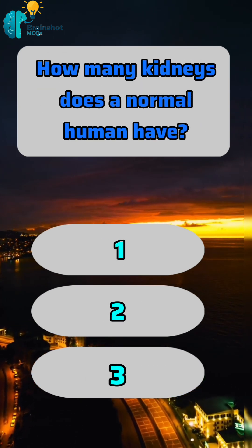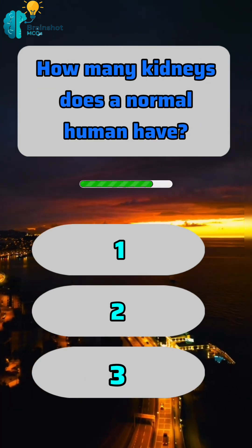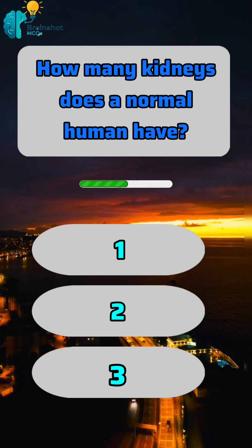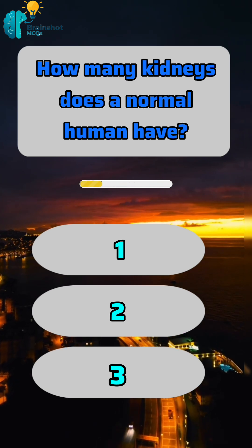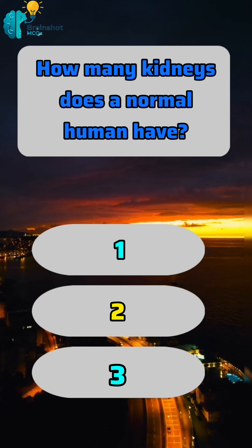How many kidneys does a normal human have? Correct answer: B. Two.